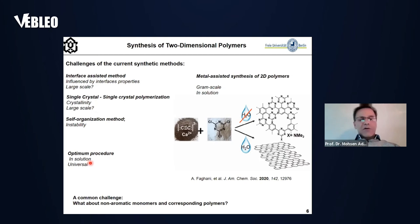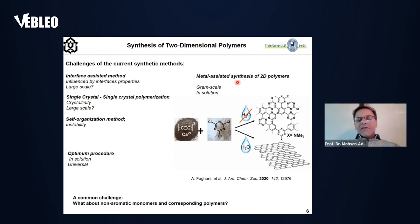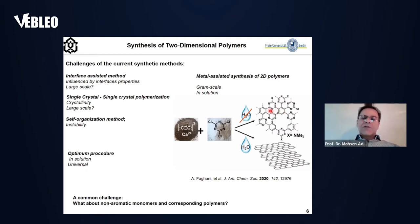Why in solution? Because in solution, we can control the reaction and structure of the two-dimensional polymer by changing the thermodynamic and kinetic parameters. This method should also be universal — able to work for a wide range of monomers. Recently, we explored a method to produce two-dimensional polymers in solution on a gram scale, and by changing the thermodynamic and kinetic parameters of the reaction, we were able to change the structure of the two-dimensional polymer.